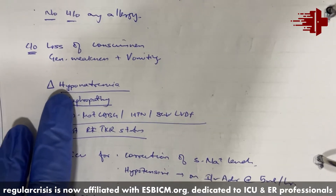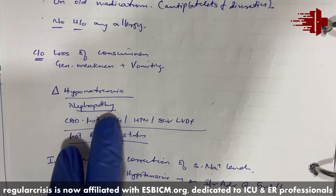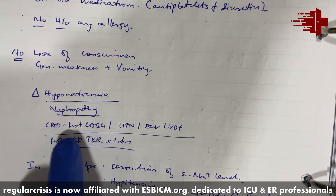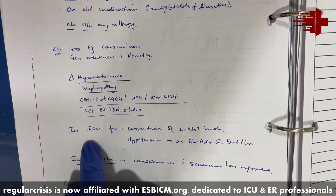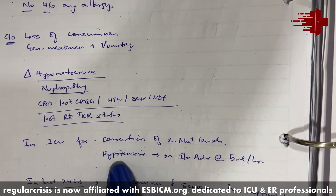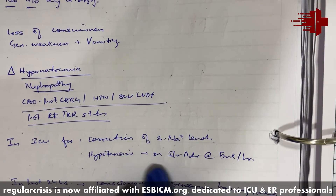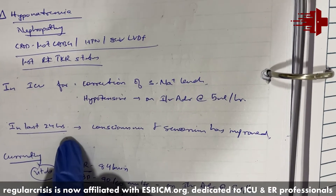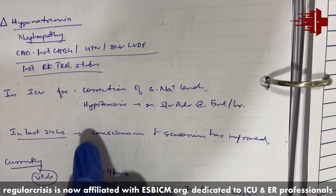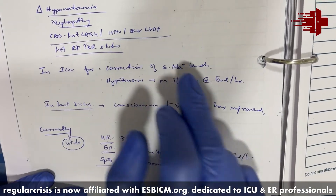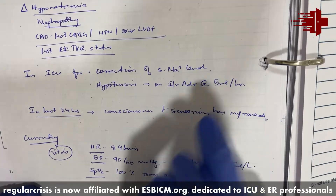On diagnosis, the patient was found to have hyponatremia. The cause of hyponatremia is not certain — we need to review the drug chart and other parameters. Nephropathy is present along with post-CABG and recent post-TKR status. The reason for ICU admission is for correction of sodium level. The patient was also hypotensive, so the patient was on adrenaline infusion. One thing missed in this record is the actual sodium level, which Dr. Benjamin will take care of.